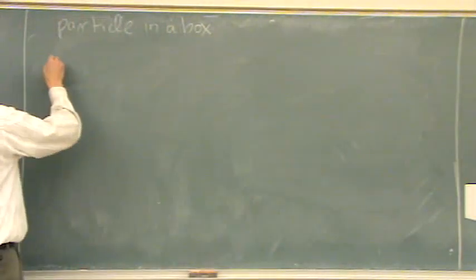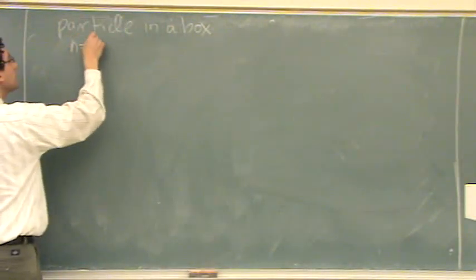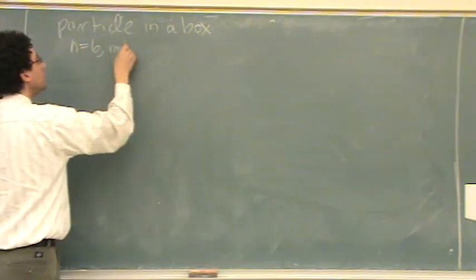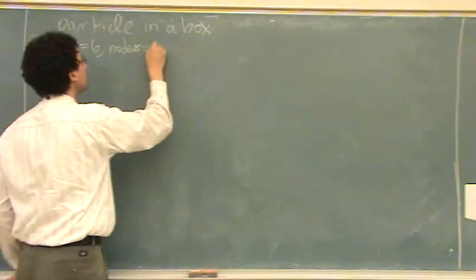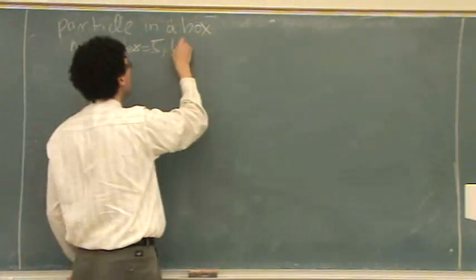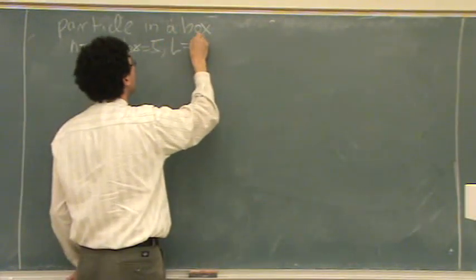Okay, so we'll do n equals 6. That means the nodes... 5, yeah, because it's n minus 1. And then the other easy thing to do is l.